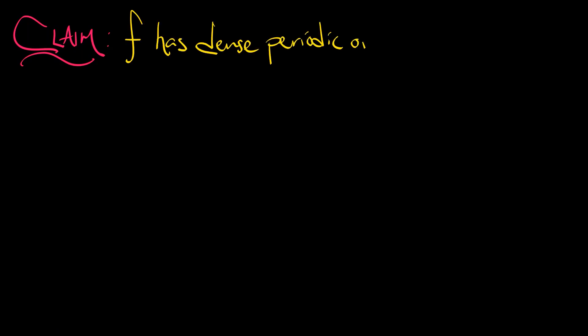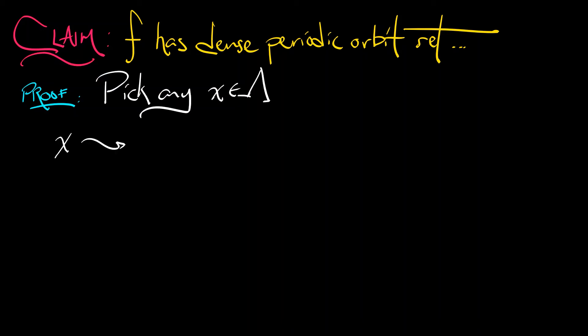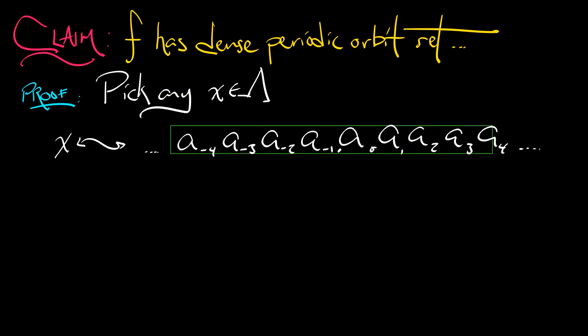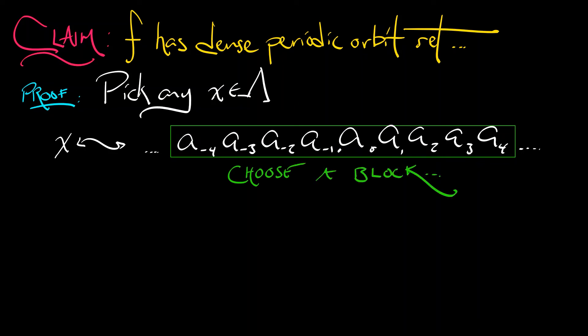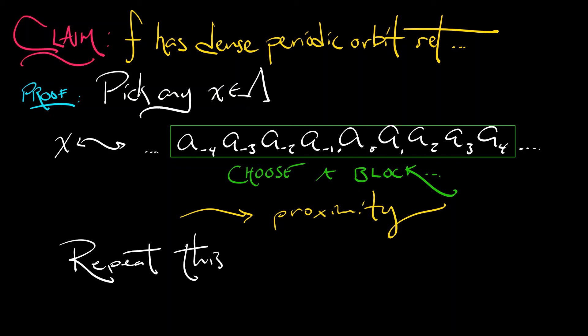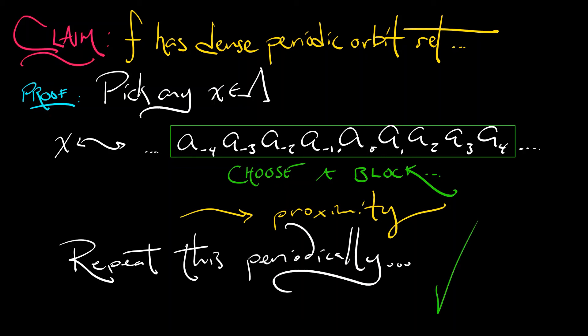Given that, it's clear how to show that the horseshoe map has a dense periodic orbit set. How do we prove that? Pick any point in the invariant set lambda, consider its itinerary — its sequence of zeros and ones — and now just choose some large block about the decimal point. Let's say a block of length 8. Whatever those digits are, repeat them periodically over and over. That's a periodic orbit of period 8 that is close to this point x. You want to get closer? Take a longer block — length 100, 1000, or a billion — and just repeat it periodically. That is a very high period periodic orbit that is as close as you want to your initial point.